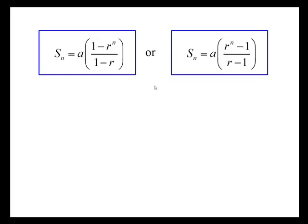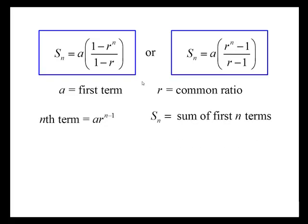a represents the first term of the series, r is the common ratio between successive terms of the series. The nth term is a times r to the power of n minus one, and Sn is just the label we give to the sum of the first n terms.